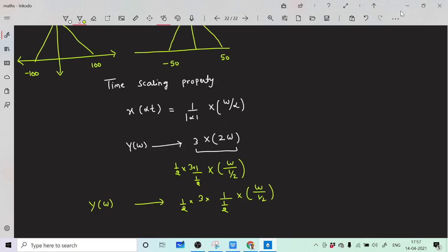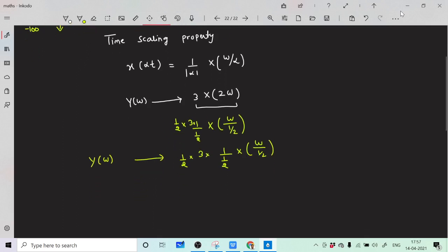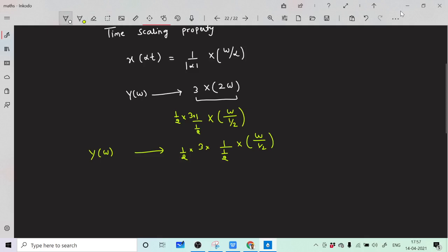Now in the transform domain, if we take the inverse Fourier transform, we get y(t). The 3/2 stays as is.